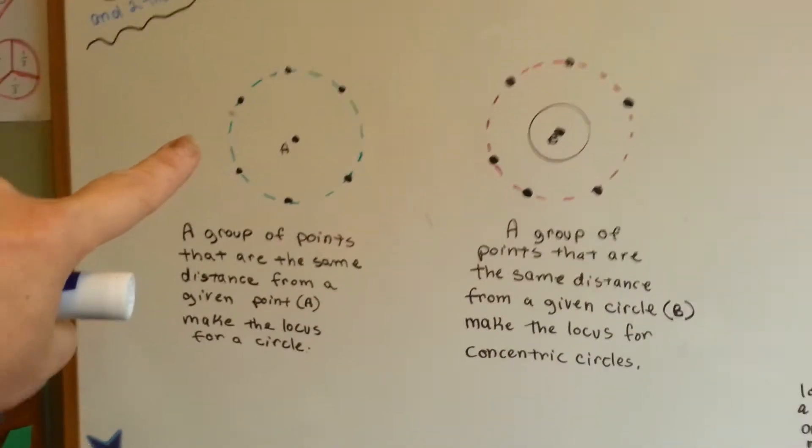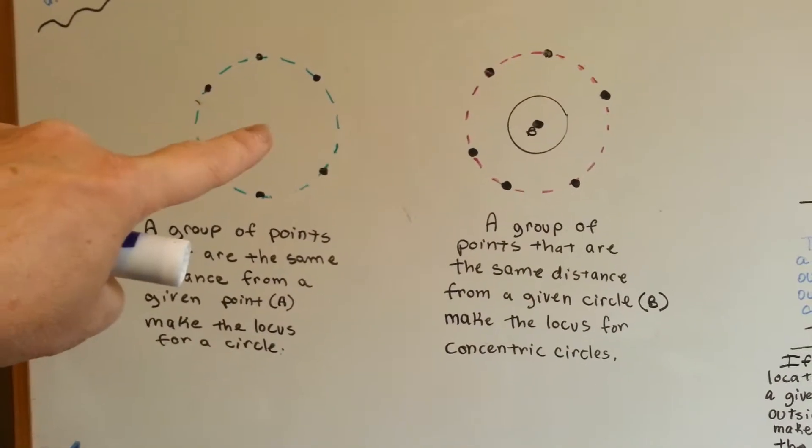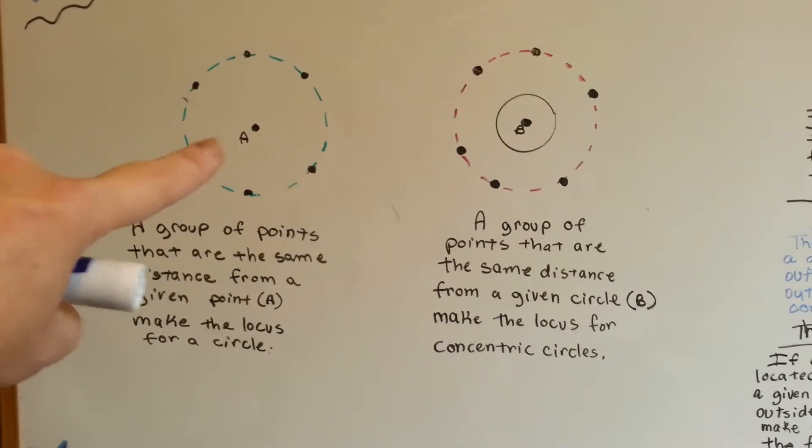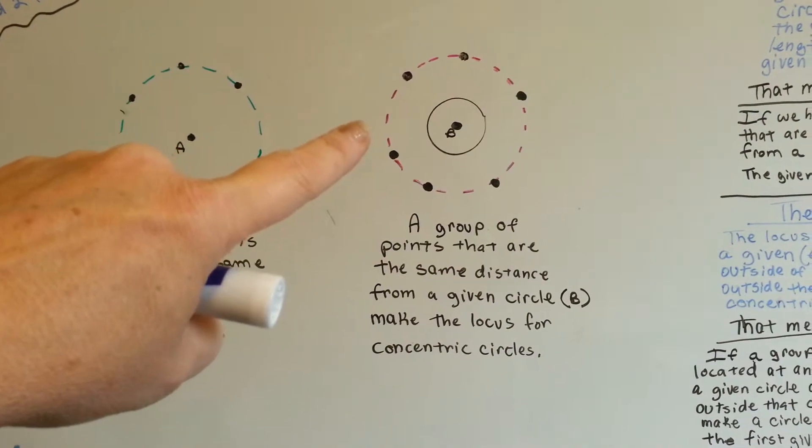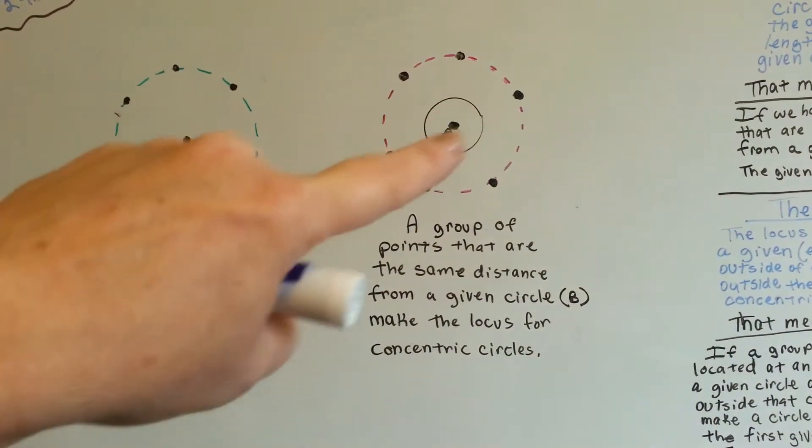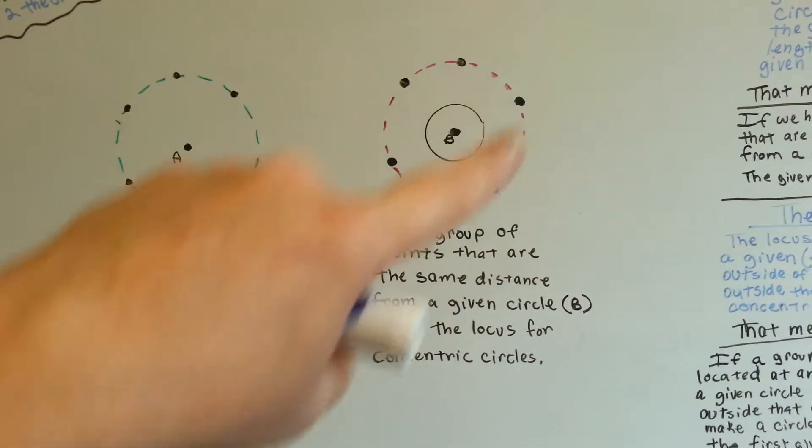a group of points that are the same distance from a given point, A, make the locus for a circle. A group of points that are the same distance from a given circle, circle B, make the locus for concentric circles.